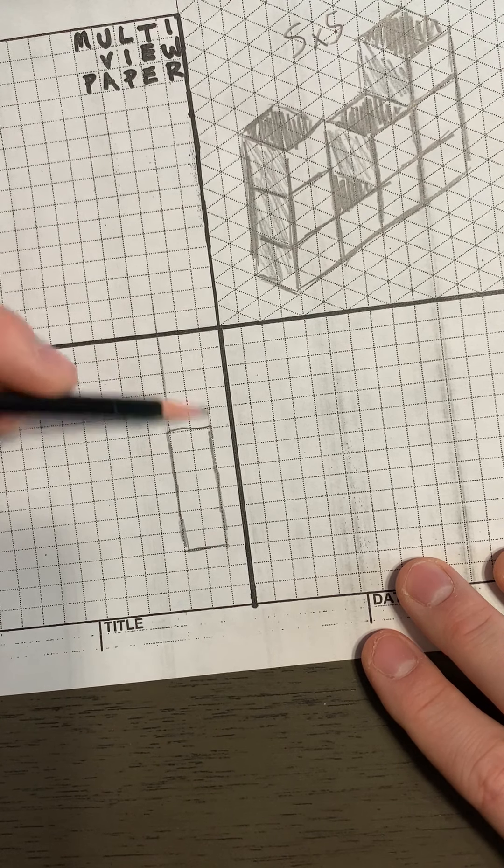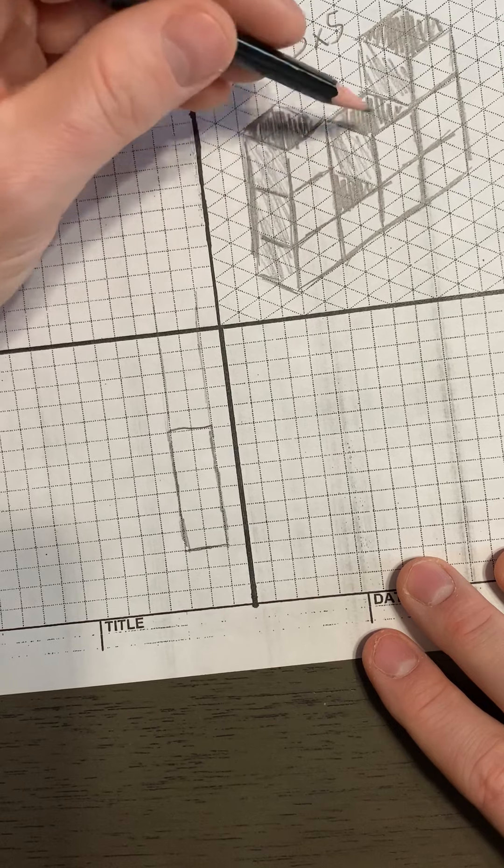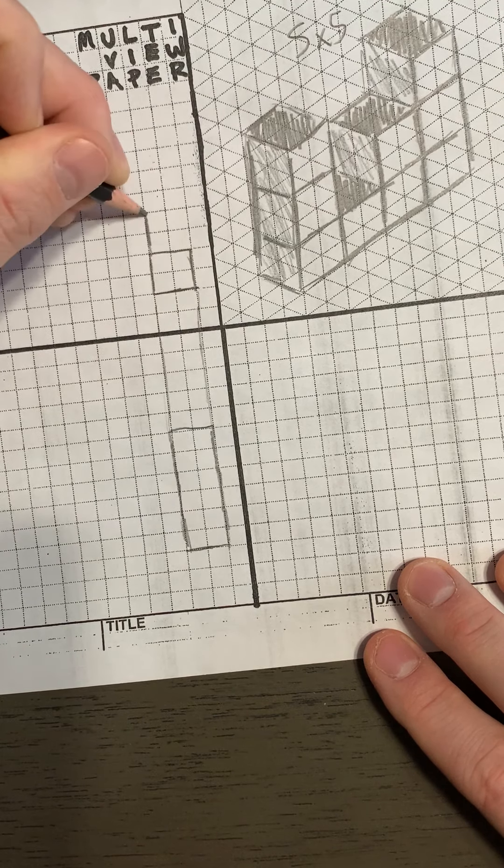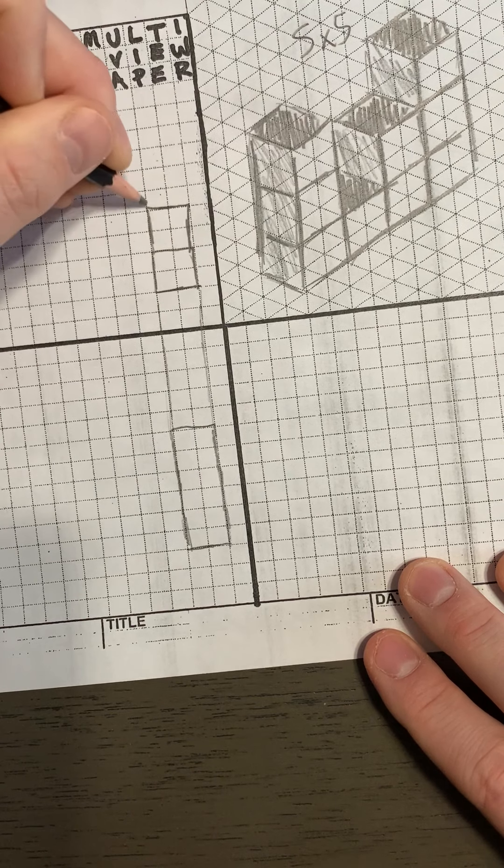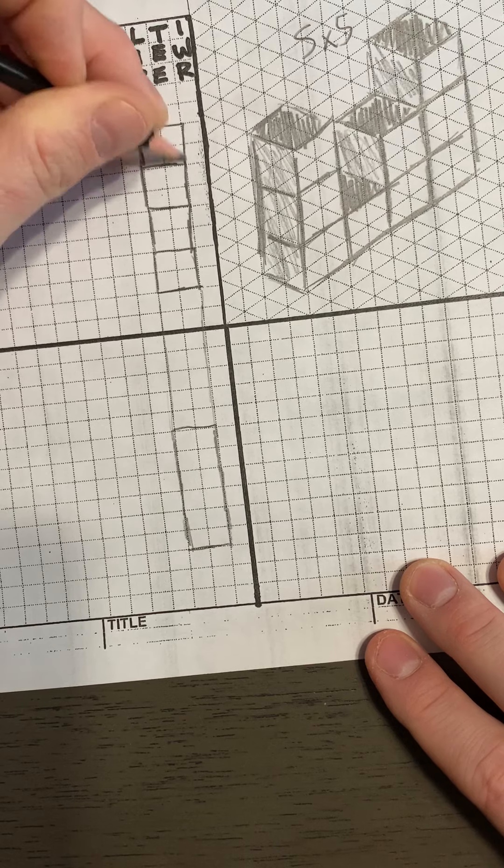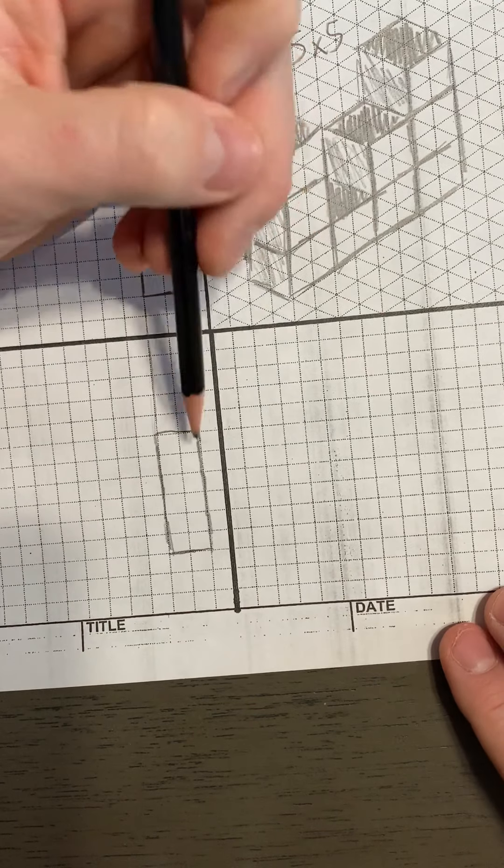Now the top view is going to be one, two, three, four. All depth changes. So all depth changes. We got this. That's four, and notice it's the same width as the front.